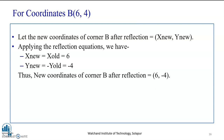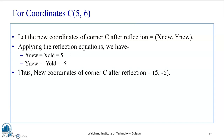For point B(6,4): applying the reflection equation along the x-axis, x-new equals x-old equals 6, and y-new equals minus y-old equals minus 4. Thus the new coordinates of corner B after reflection are (6, -4). For point C(5,6): x-new equals x-old equals 5, and y-new equals minus y-old equals minus 6. Thus the new coordinates of corner C after reflection are (5, -6).